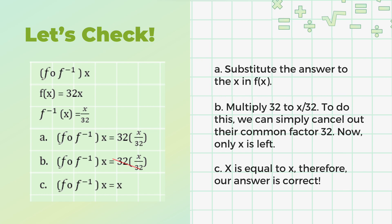To check our answer, apply composition of functions, wherein both sides must have an answer of x. Let's write f-circle-inverse of f to denote that it's a composition of functions. Substitute the answer to the x in f(x). Distribute 32 to x over 32 — we can simply cancel out the common factor 32. Now only x is left. x is equal to x. Therefore, our answer is correct.